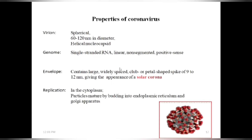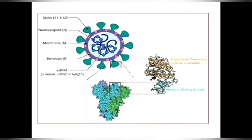Regarding the properties of coronaviruses: these viruses are spherical, 60 to 120 nanometers in diameter, with a helical nucleocapsid. They consist of single-stranded RNA which is linear, non-segmented, and positive-sense. They contain large, widely spaced, club-shaped or petal-shaped spikes of 9 to 12 nanometers, giving the appearance of a solar corona. Replication occurs inside the cytoplasm, and particles mature by budding into the endoplasmic reticulum and Golgi apparatus.